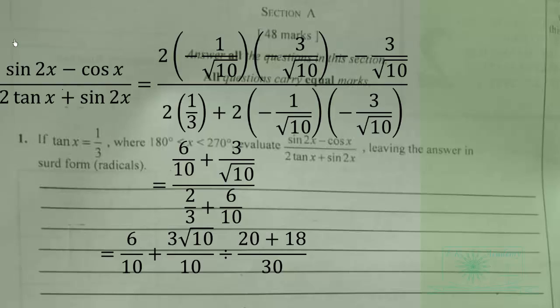So we collect the LCM for the denominator. LCM is 30. 3 goes into 30 ten times, then 10 times 2 is 20. 10 goes into 30 three times, 3 times 6 is 18. So that will give us 38 over 30.